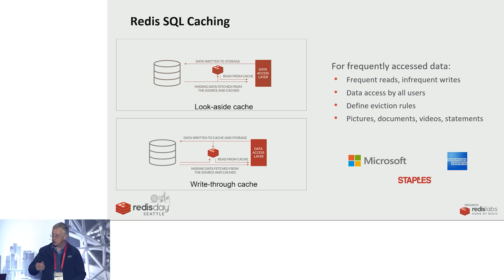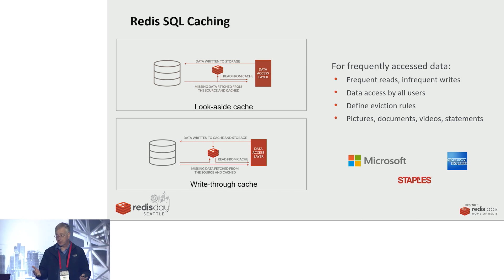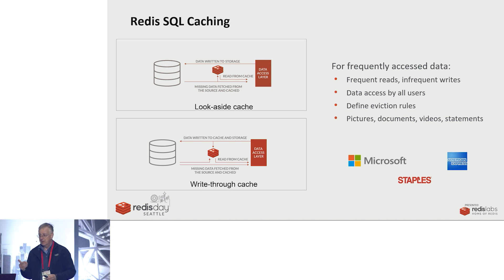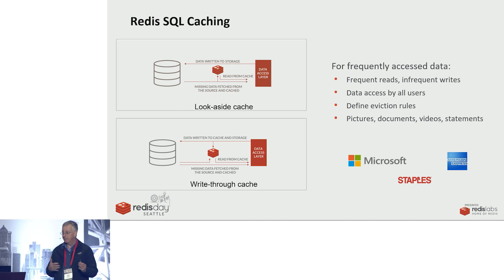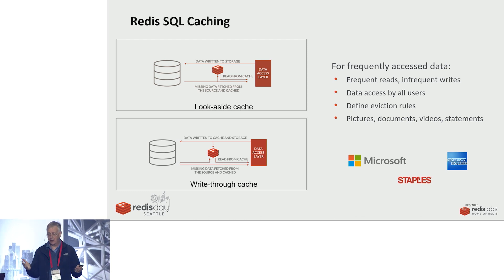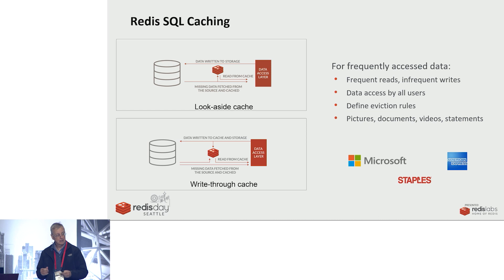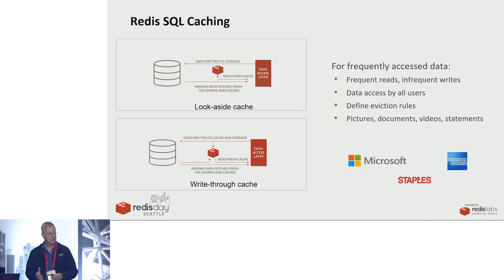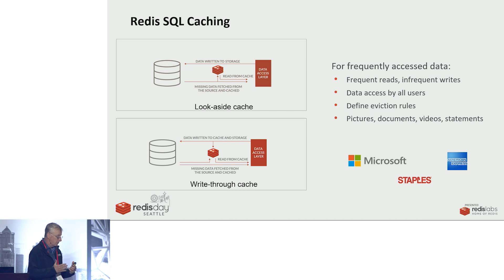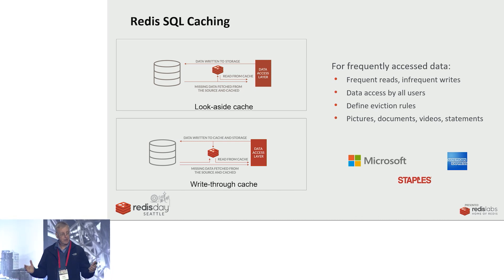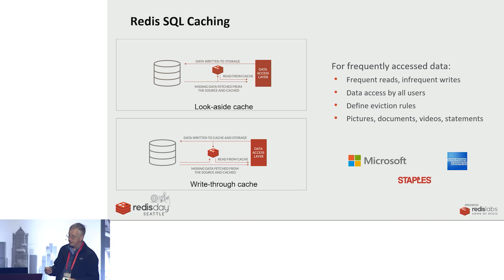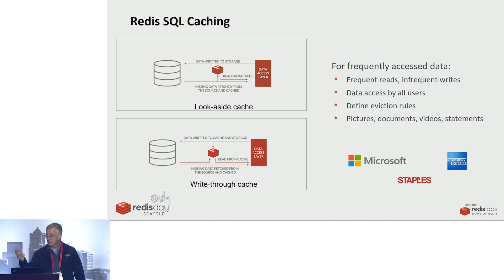The first use case — and John was just presenting on this — is a very well-known use case: offloading the SQL backend with a Redis-based cache. This works best for frequent reads and infrequent writes. It's data accessible by all users. You have to include a defined eviction plan for that cache data. It works very well for a SQL-based backend because it's going to offload those reads from it. People effectively offload computing from that expensive, slower SQL backend to an economical, purpose-built Redis engine.